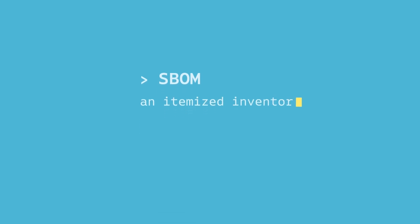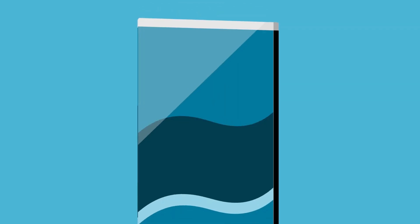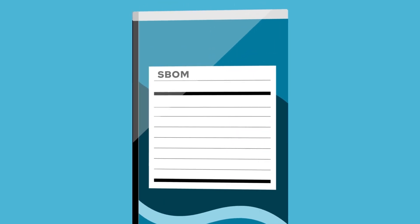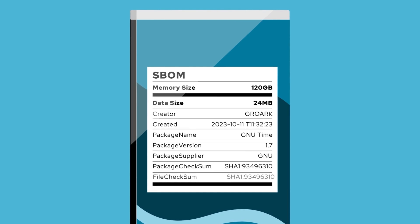Recent events such as Log4j and SolarWinds incidents have triggered a major shift in how we view software risk and trust. As we begin to answer the question of who is responsible for security, one essential piece emerges to help fortify software supply chains: the SBOM. A software bill of materials is an itemized inventory that breaks down software into its component parts, including any libraries, dependencies, and metadata associated with an application. Essentially, the SBOM provides an ingredients list of what's in our software and where it comes from.